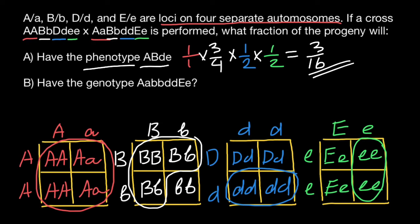The first question was about phenotype; the second question is about genotype. What is the probability that progeny are going to be heterozygous for gene A? As you can see, 50 percent of the progeny are going to be heterozygous, so the probability is one-half.